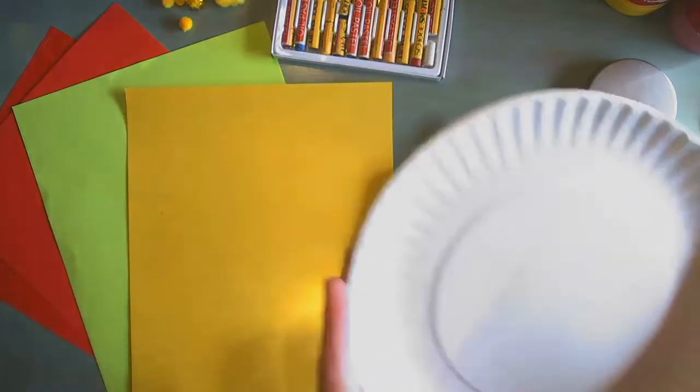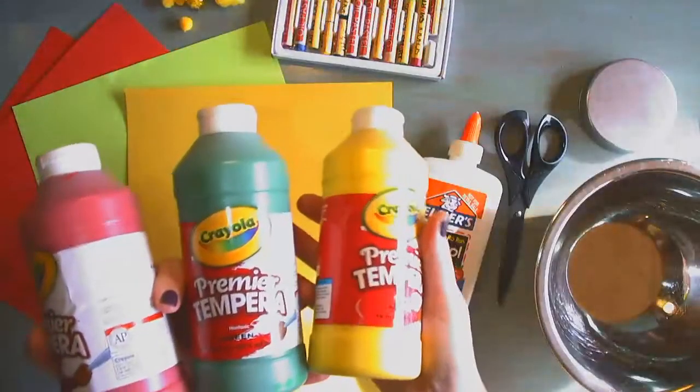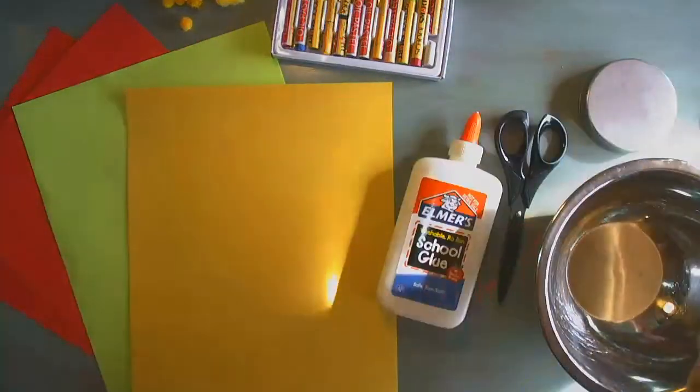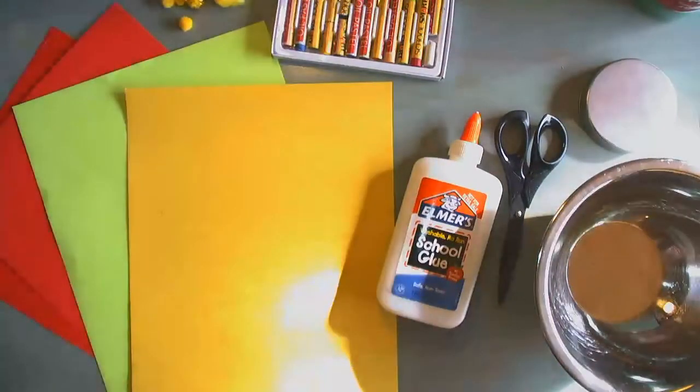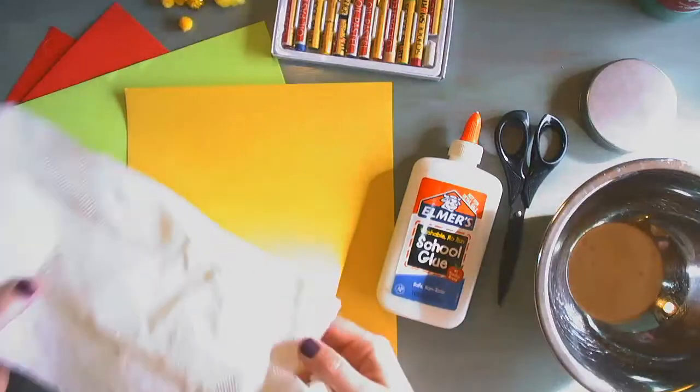Now the second way I will show you is using a paper plate and I'm going to use some washable tempera paint. So if you have those items you'll need three paper plates and red and green paint. Yellow will be optional.